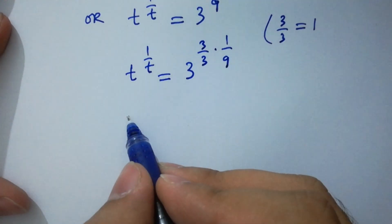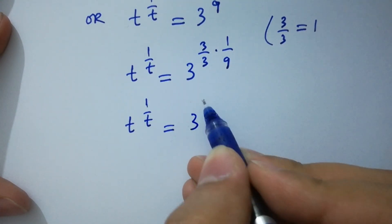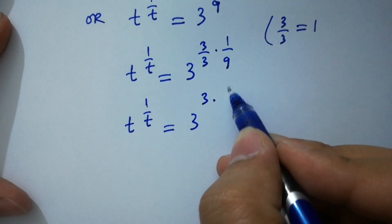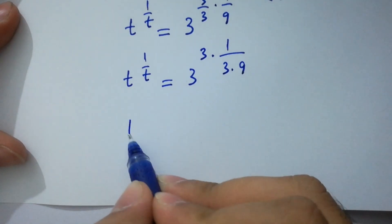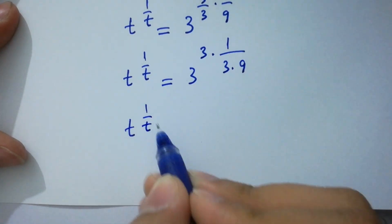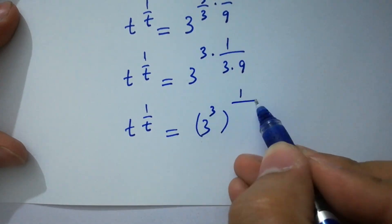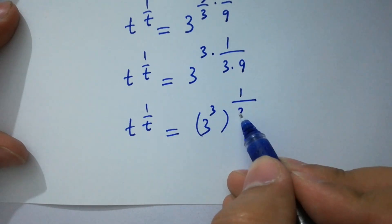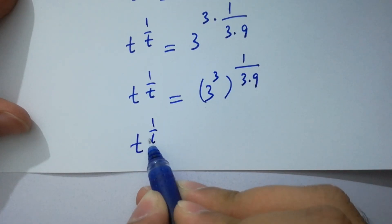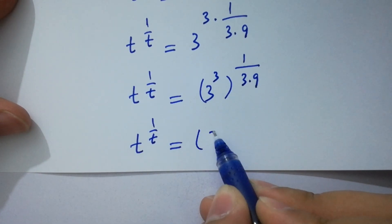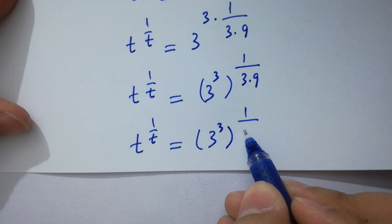Simplify this. t to the power 1 over t equals 3 to the power 3 times 1 over 3 times 9. Then t to the power 1 over t equals 3 to the power 3, to the power 1 over 3 times 9. We have 27. t to the power 1 over t equals 3 to the power 3, to the whole power 1 over 9 times 3.